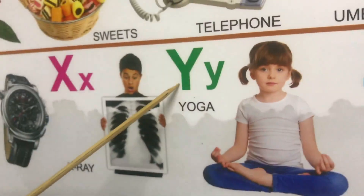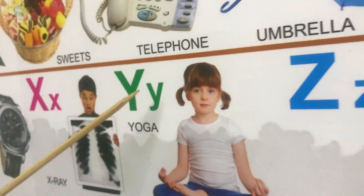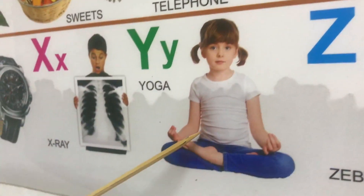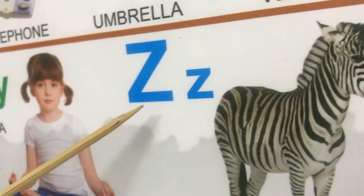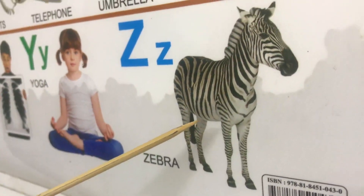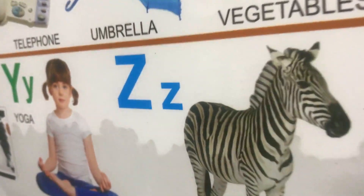Capital Y, small y. Y for yoga. Capital Z, small z. Z for zebra.